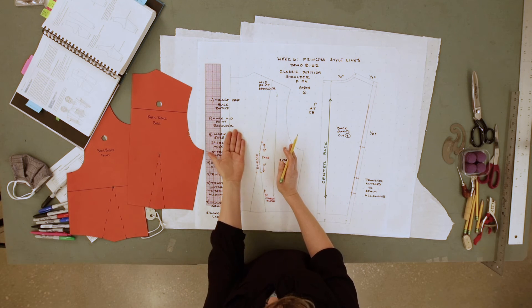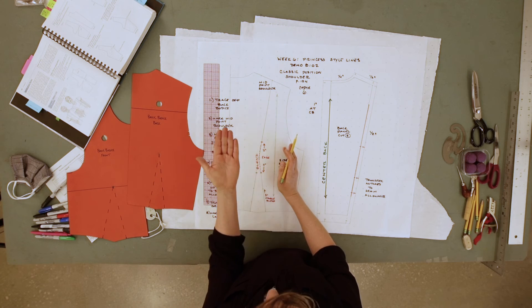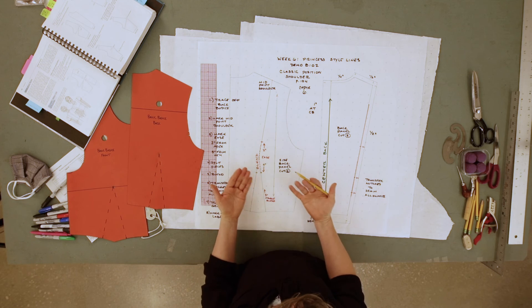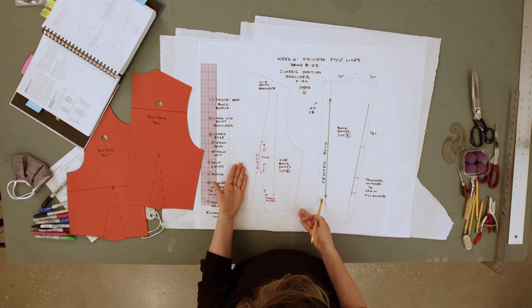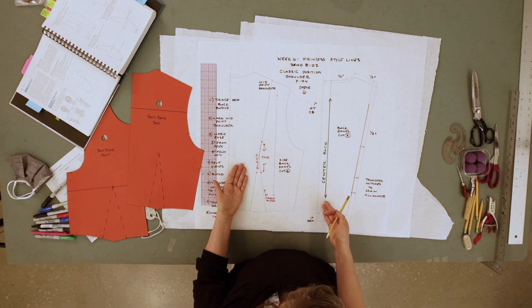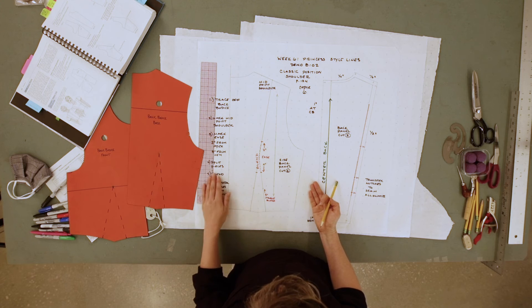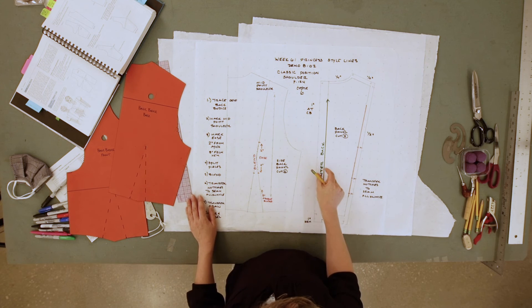If you're cutting your front on the fold, you need a closure in this garment. It could be a side seam zipper. It could be a center back zipper. For the purposes of this exercise, we are going to add an inch off of the center back to accommodate a zipper.